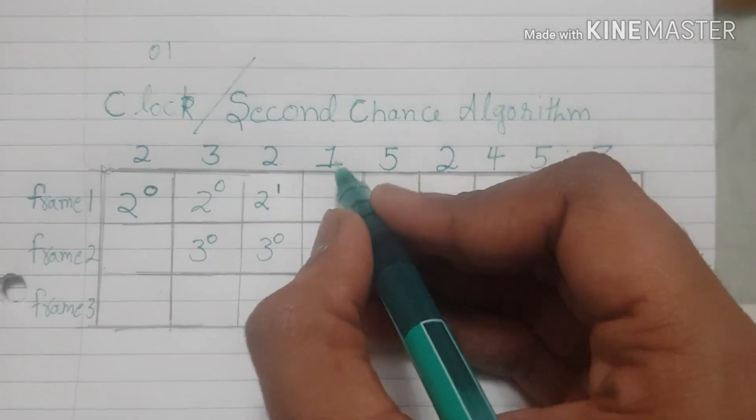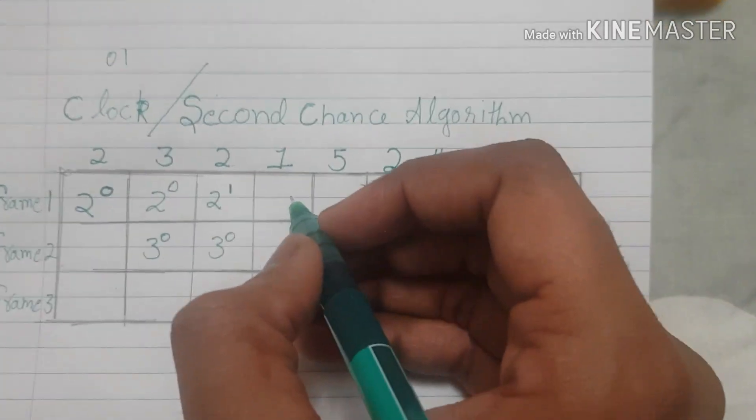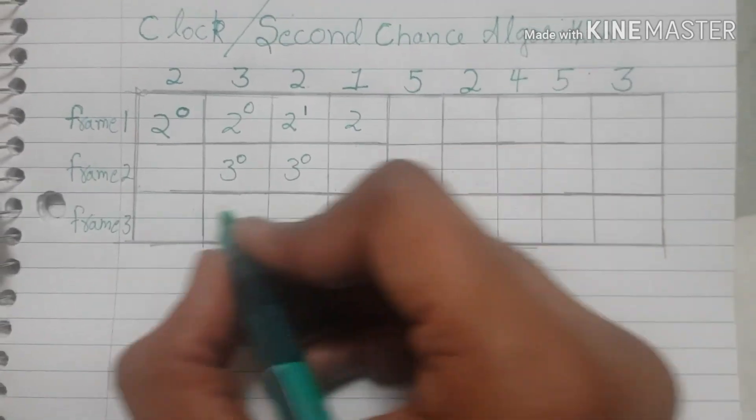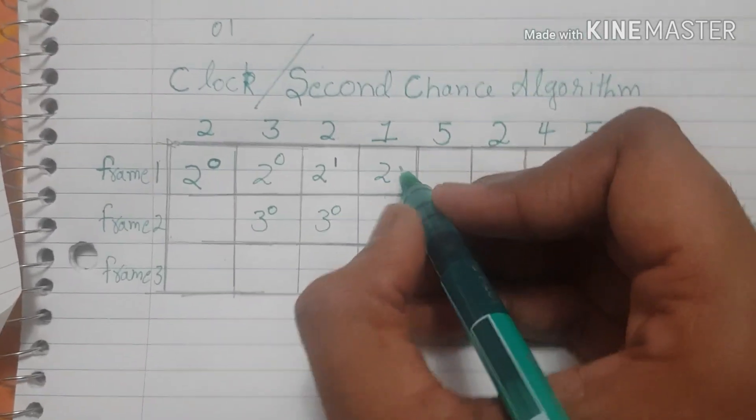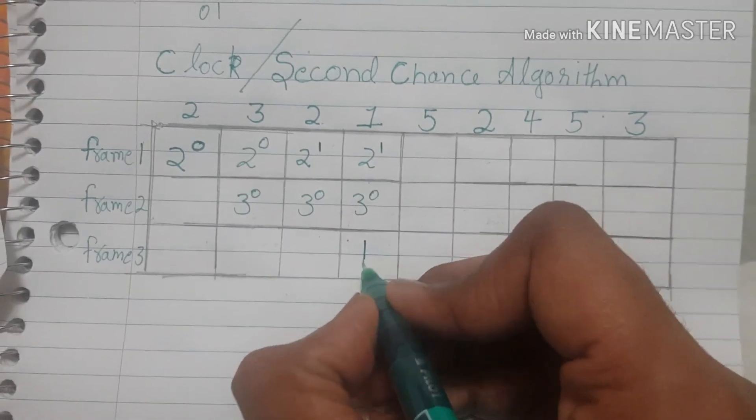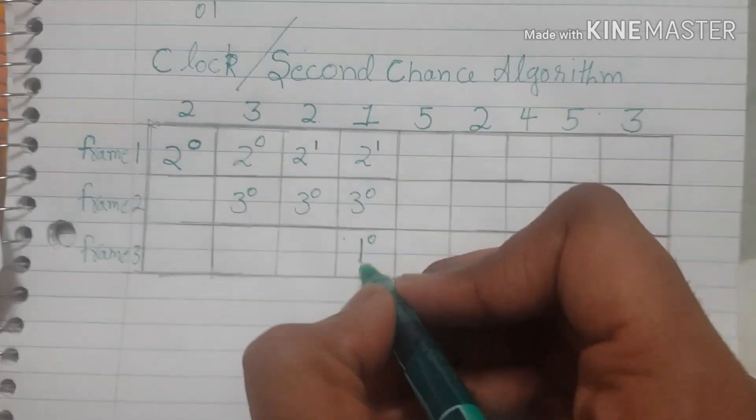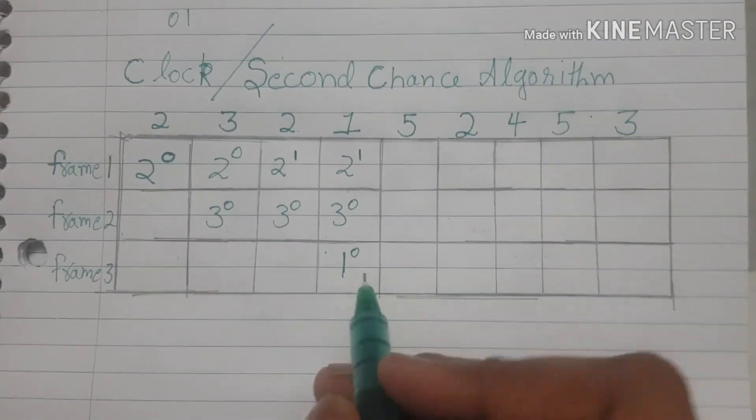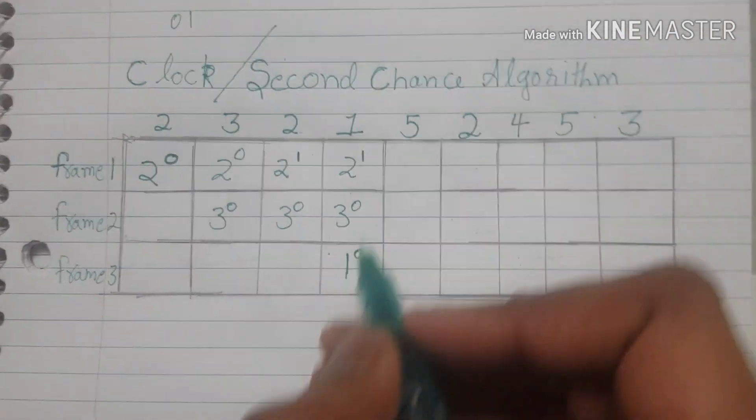Next we have to bring in 1 to the table and we still have one frame left, so what we do is bring in 1 to the empty frame. As already said, the value of reference bit is 0 because it just came in.